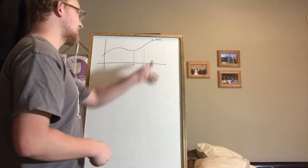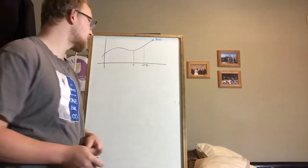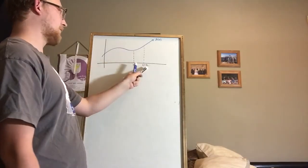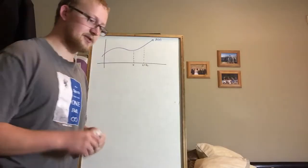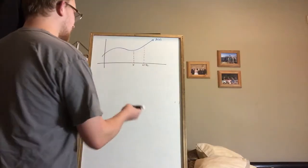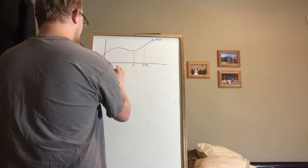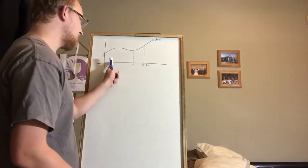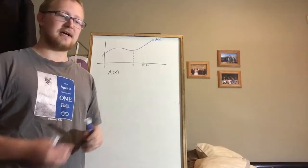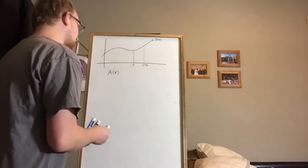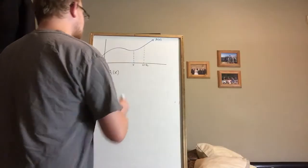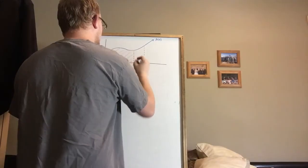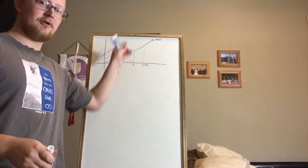Imagine we have this function f(x), and we're marking off a point on the x-axis where x equals x, and one where x equals x plus h. Now I want you to imagine a function — I'm going to call it A(x). In A(x), all you do is plug in what x value you're at, and it will tell you how much area is underneath the curve. So if I plug in A(x), I'm going to find the area between 0 and x under the curve.